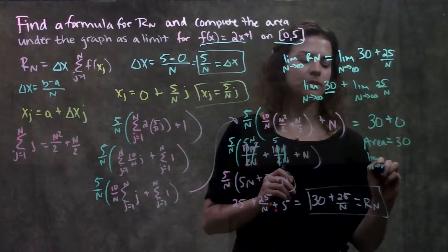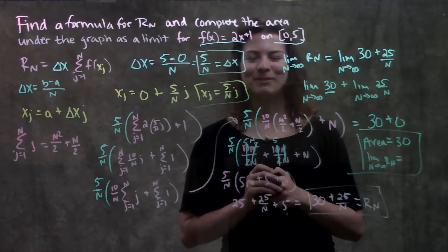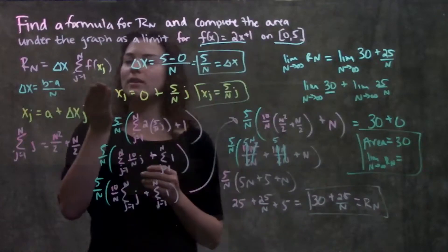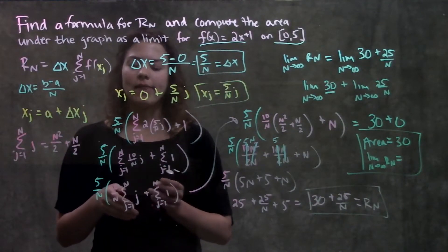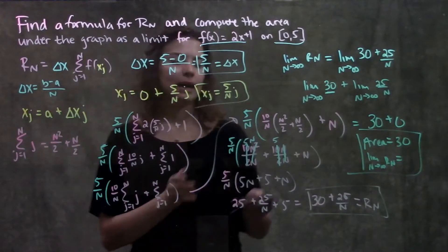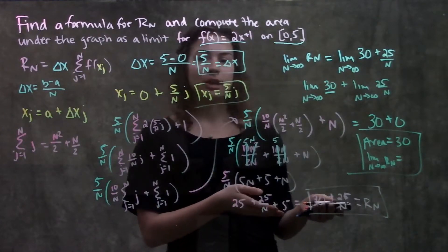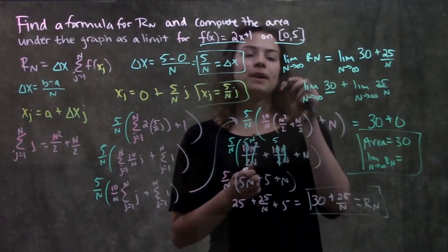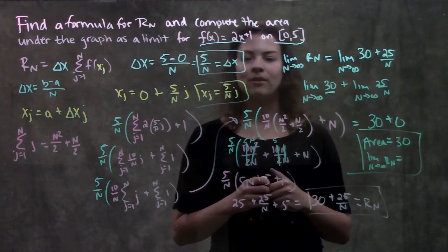Or, the limit as n approaches infinity of Rn is equal to 30. And, that's finally it for this problem. So, remember to find my general formula of Rn, I just used this equation here that they gave me, found both of my parts, my delta x and my x sub j, plugged it in, and then I had to do some simplifying. I had to make sure each of my summations matched the formula that I had in this section. And, when I plugged in my formulas that they had given me, I just multiplied everything out, and got a general formula for r sub n. And, then for the second part, where they're asking me to calculate the area as a limit, you just find the limit as n approaches infinity of the function that you calculated there. And, we got this value of 30.